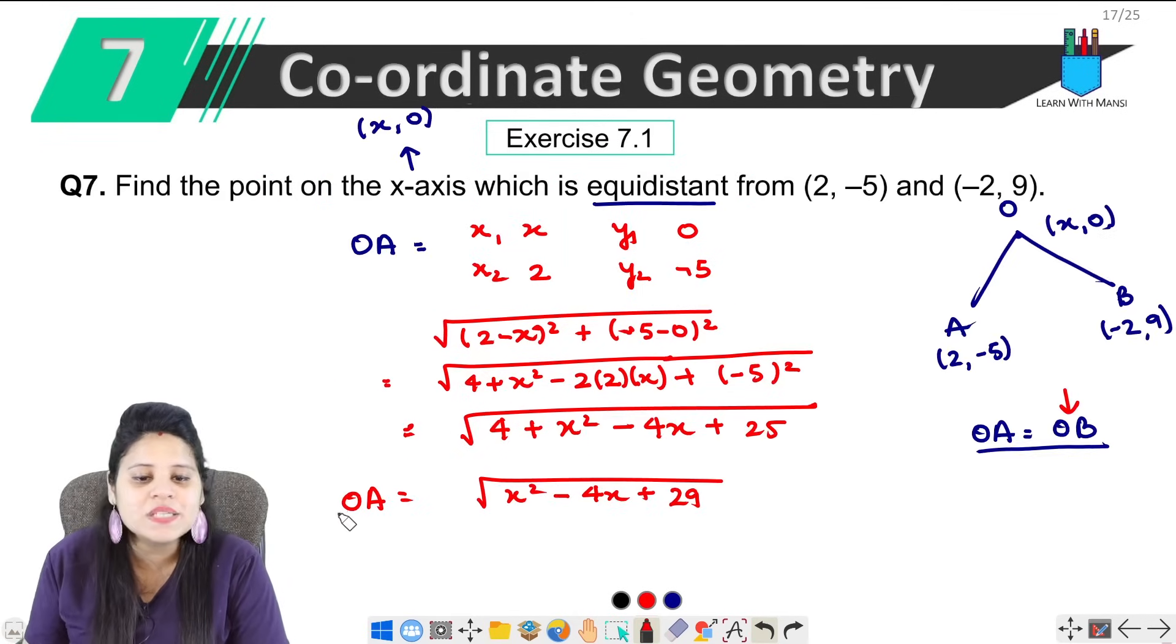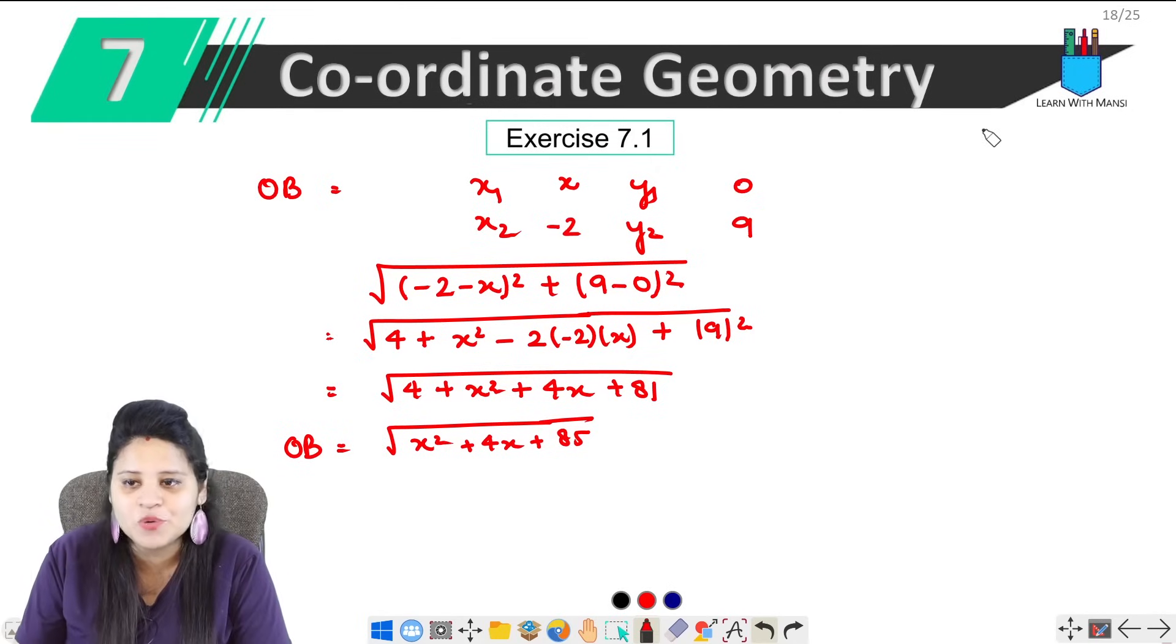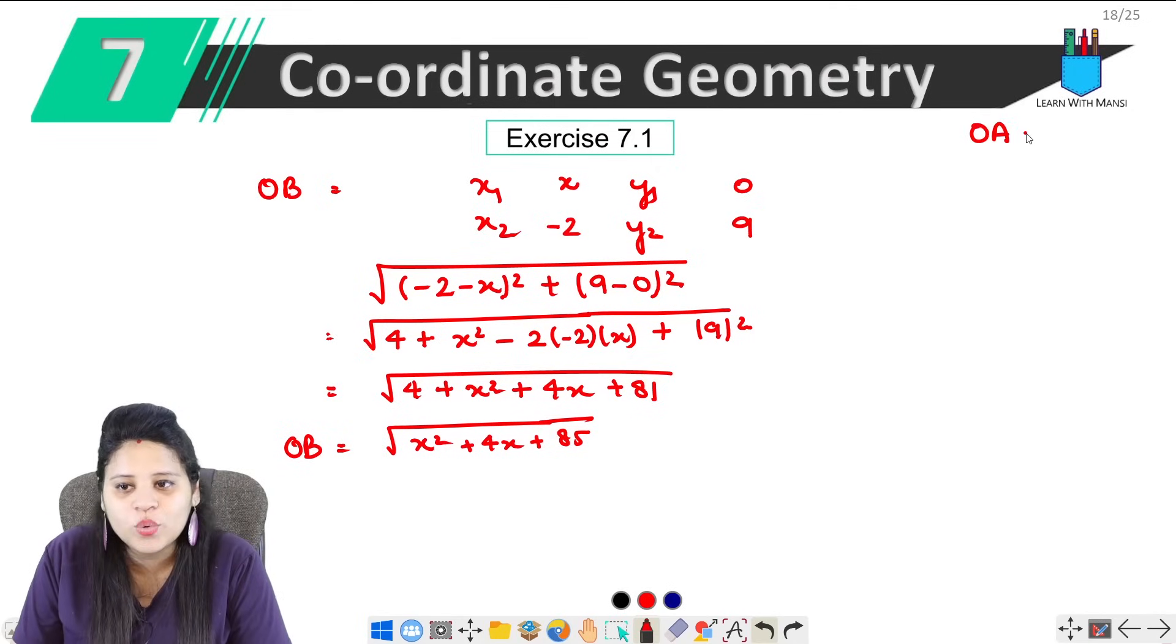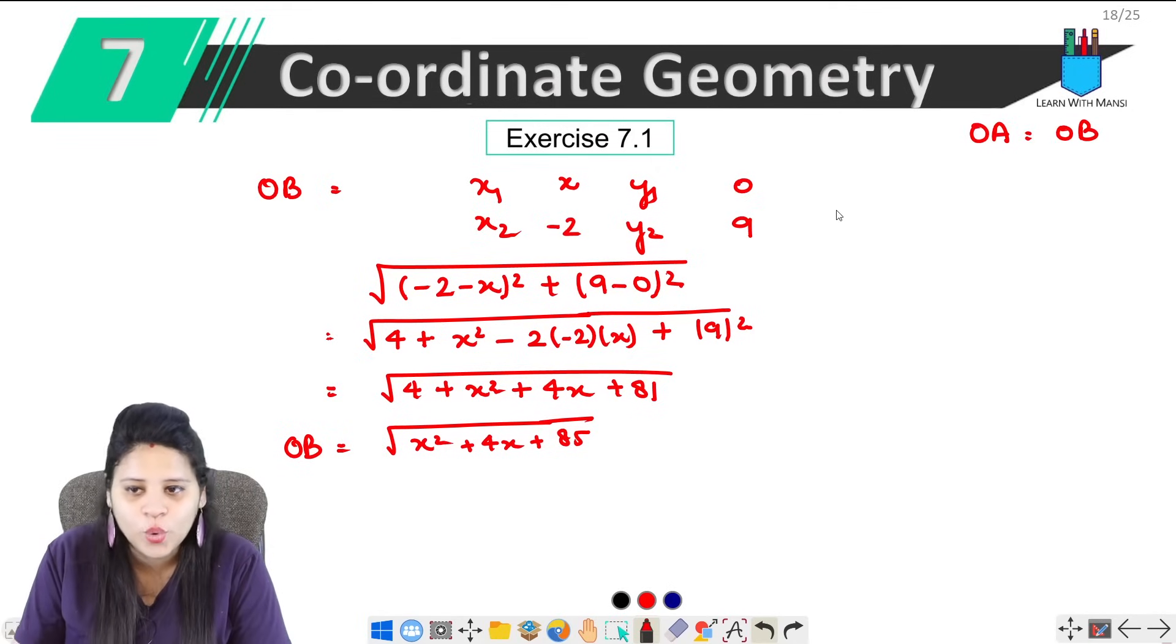Now we have OA value also, OB value also. Now it is given that OA is equal to OB. Which means OA value under root (x² - 4x + 29) equals OB under root (x² + 4x + 85).